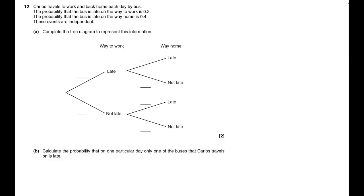Okay, for our tree diagram, the probability the bus is late to work is 0.2, so ways to work that'd be 0.2. If it's probably 0.2 it's late, it'll be 0.8 it's not late. On the way home it's 0.4, so late on the way home is 0.4, so not late will be 0.6. Once again, late will be 0.4 and not late 0.6.